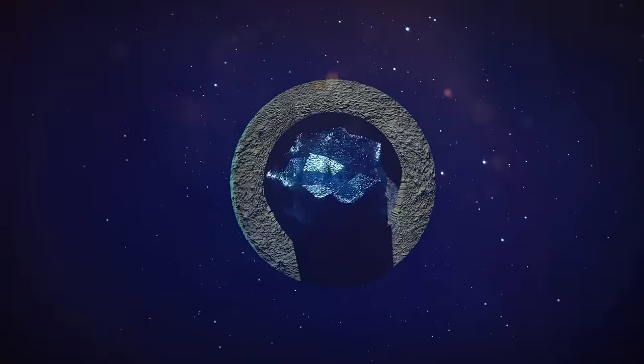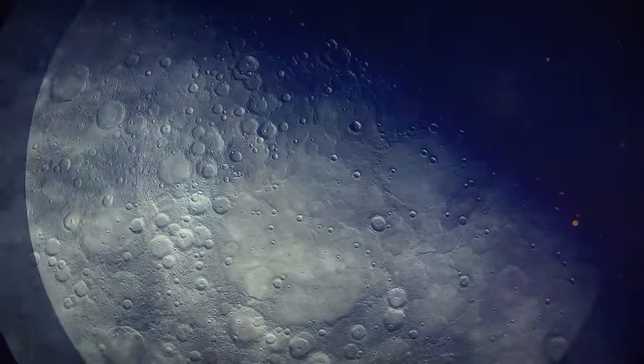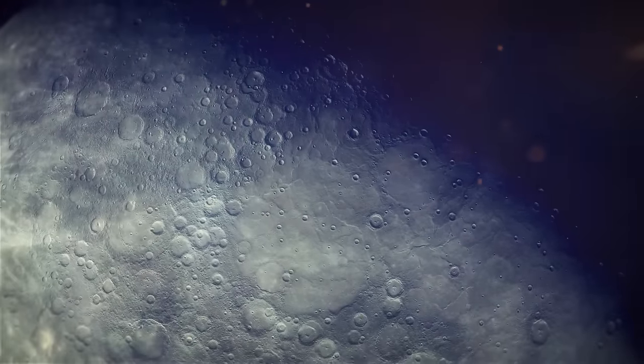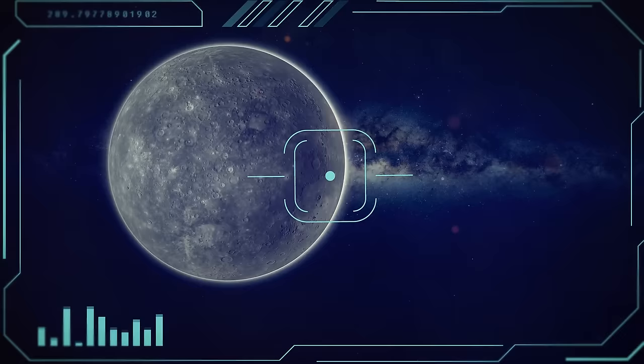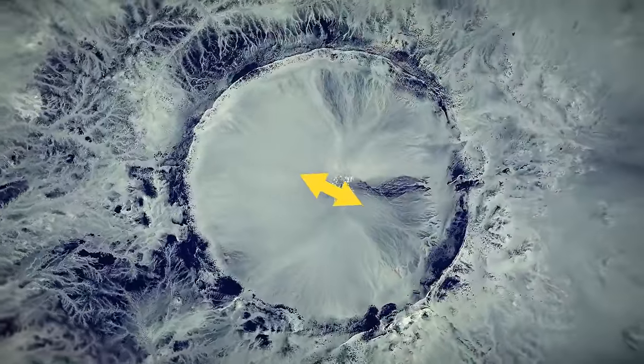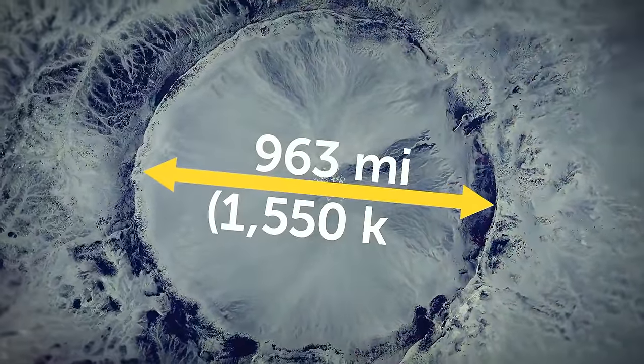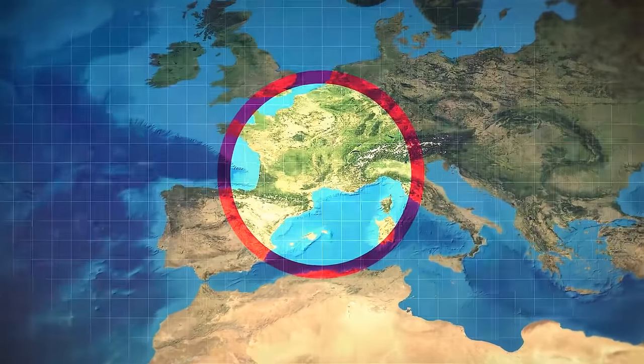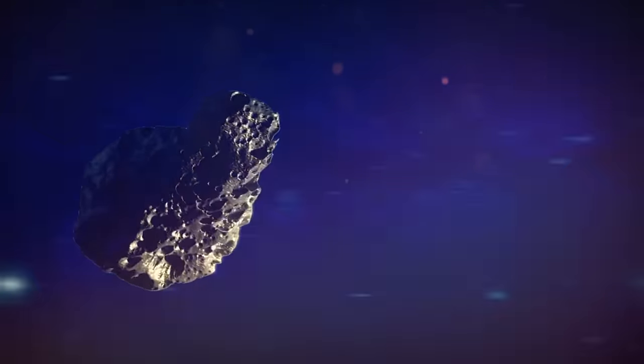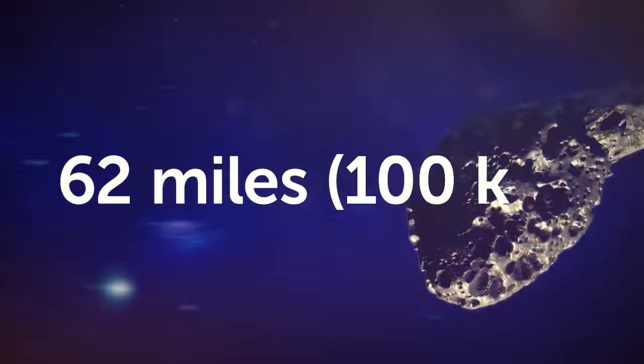Mercury is the planet with the biggest number of craters in our solar system. Its atmosphere is really thin, so it can do nothing to keep the planet protected from meteors. The largest crater on Mercury's surface is at least 963 miles across. It could fit Western Europe, from Germany to Portugal. The object that formed such a crater must have been at least 62 miles long.